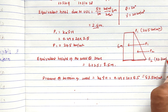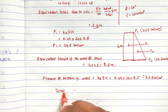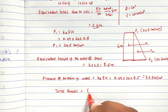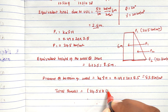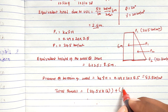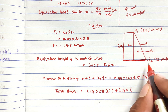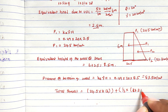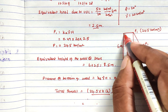Now we can calculate the total thrust. Total thrust equals p1 into h, which is 24.5 into 6, plus half into the additional pressure. The additional pressure is 83.3 minus 24.5, multiplied by the height of 6 meters.